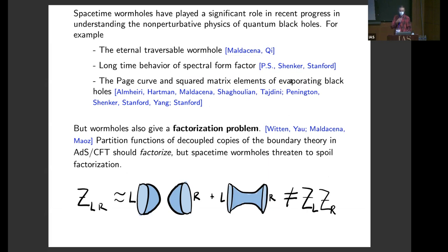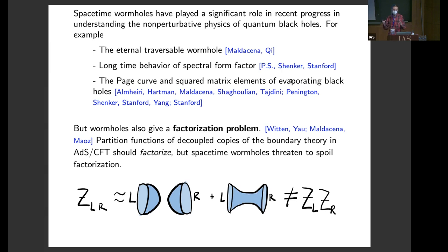Based on one of the recent developments, in addition to helping solve some problems, the basic version of this factorization problem: consider the computation of two copies, a couple of copies of the boundaries of the system. But if you try to compute these particular functions using the bulk theory, and the contribution between space-time wormholes which is linked to asymptotic boundaries, you appear to get an answer which does not factor.